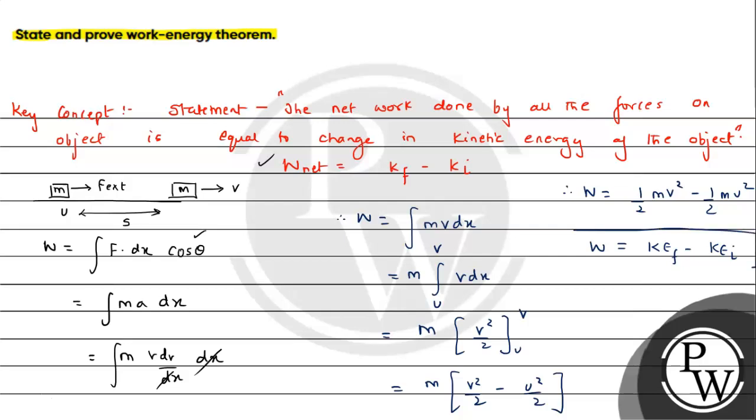So this corresponds to kinetic energy final minus kinetic energy initial. So this is the proof we can have for work-energy theorem. I hope you understood the solution. All the best.